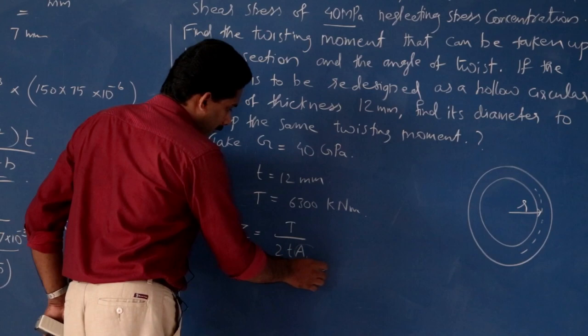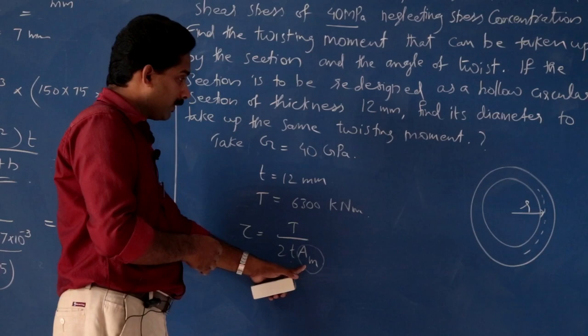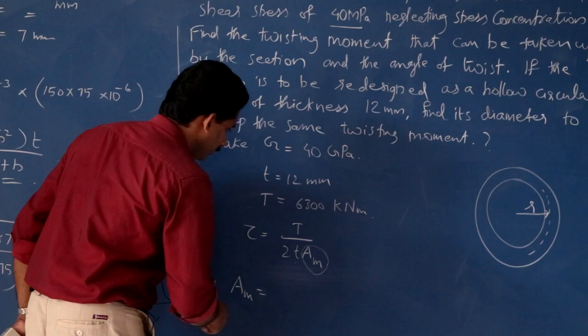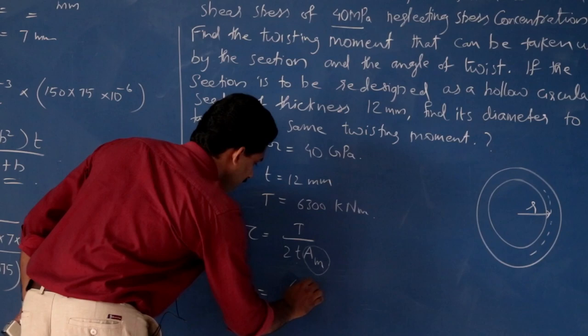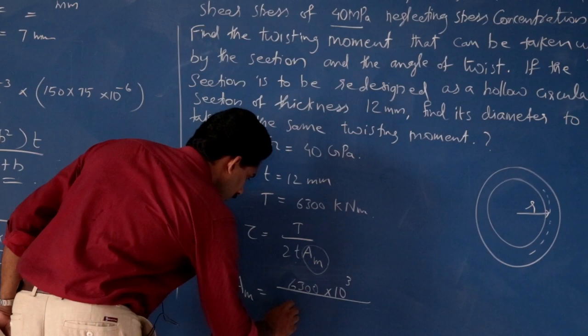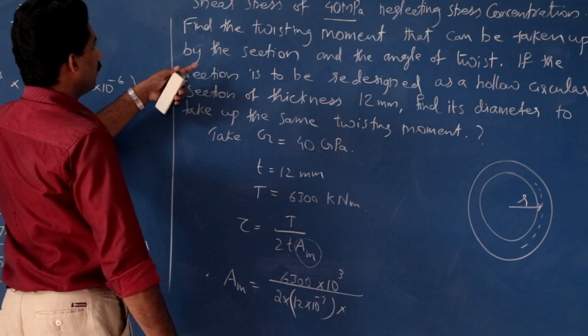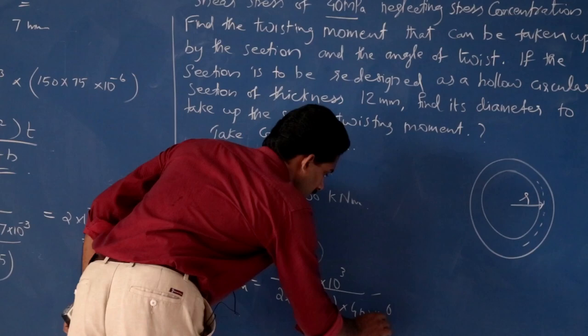Maximum shear stress tau will be the same. The only unknown is Am — mean area. So, Am is equal to T divided by tau into 2T. T is 6300 into 10 raised to 3 divided by 2 into thickness 12 into 10 raised to minus 3 into tau. Shear stress is already taken — 40 megapascal — 40 into 10 raised to 6. So, the mean area is found.